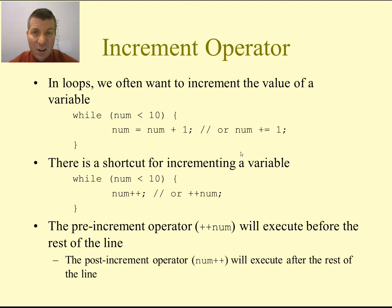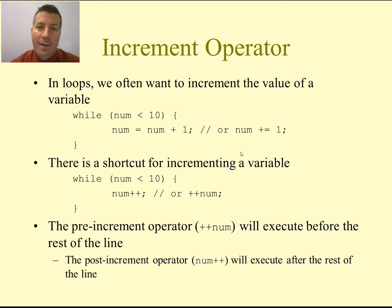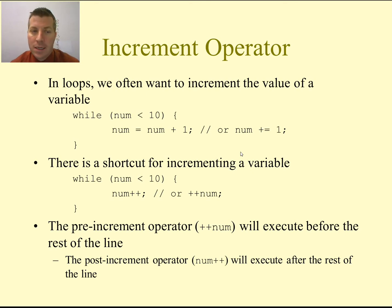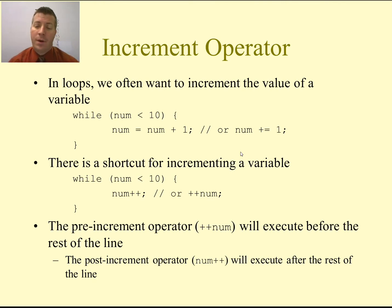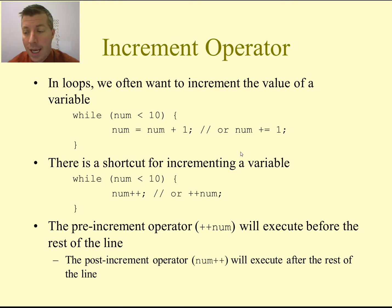We also have a decrement operator — the minus-minus — which can be a pre-decrement or post-decrement operator. We do not have the same operator for multiplication, division, or modulus. If you think about it, since it only uses the value one, multiplying a variable by one gives you the variable, dividing by one also gives you the variable, and taking the modulus after dividing by one always gives you zero. So the pre/post increment and decrement only work with plus-plus and minus-minus.